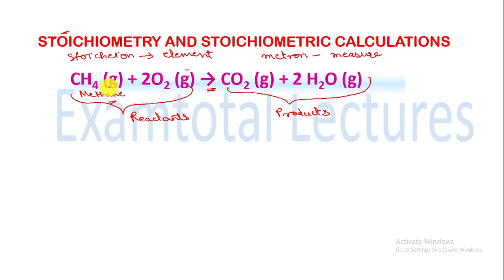We have discussed how to balance a chemical equation in detail in our previous videos. Now, the numbers like '2' before O2 and '2' before H2O are called stoichiometric coefficients. These coefficients tell us how many molecules or moles participate in the reaction.